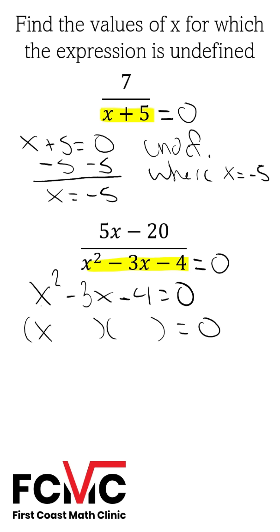x squared factors into x and x. We want to factor the negative 4 into the second term. We factor that into negative 4 and positive 1. Then using our zero product property, we're going to break this up into x minus 4 equals 0, x plus 1 equals 0.